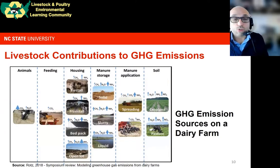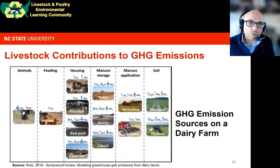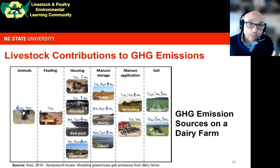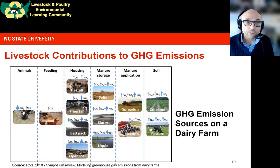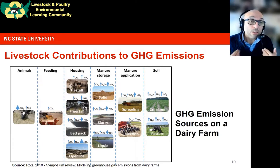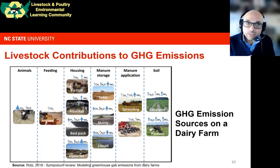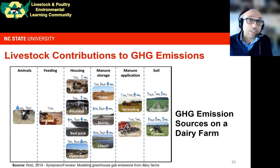Looking more closely at the animal industry using a dairy-focused review, we can see emissions by different stages of the production cycle. Enteric emissions come from the digestion process; emissions from feeding are primarily from energy used for handling and transporting materials. There are also direct emissions from housing — free stall, bedded pack, or open lot — including methane, nitrous oxide, and ammonia. Though ammonia isn't a greenhouse gas itself, there is an indirect pathway from ammonia emissions to nitrous oxide, making it an indirect source of greenhouse gas.